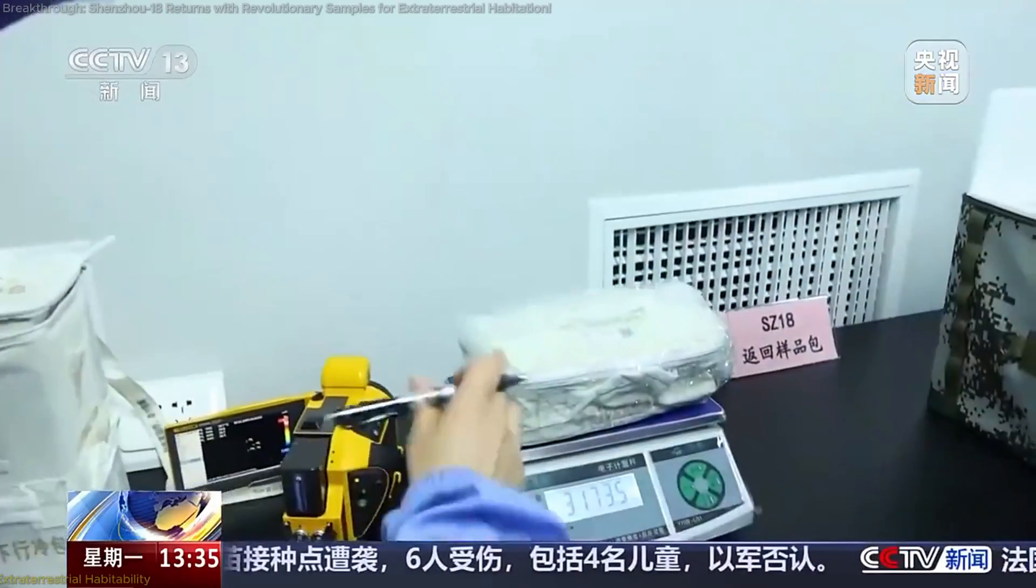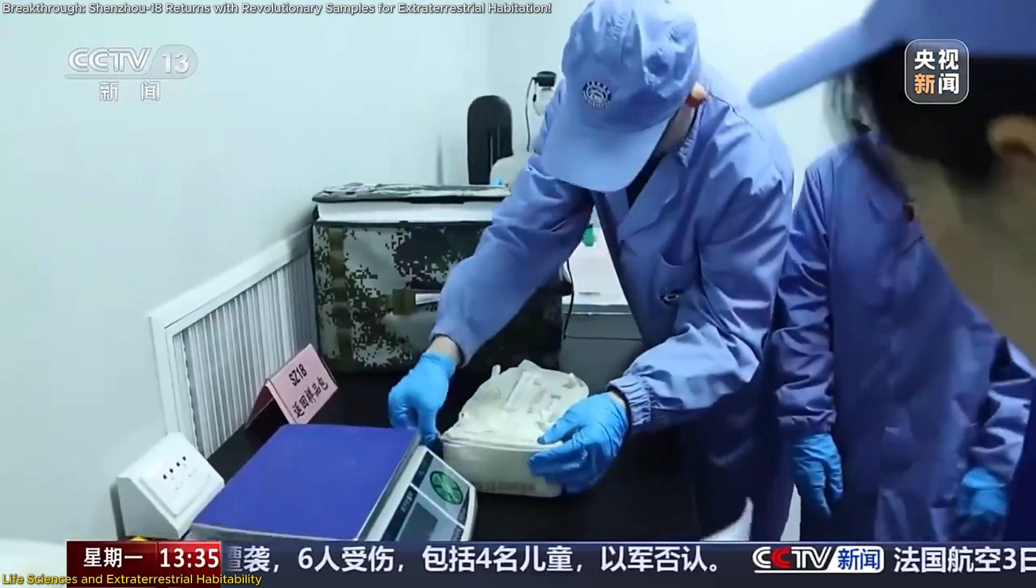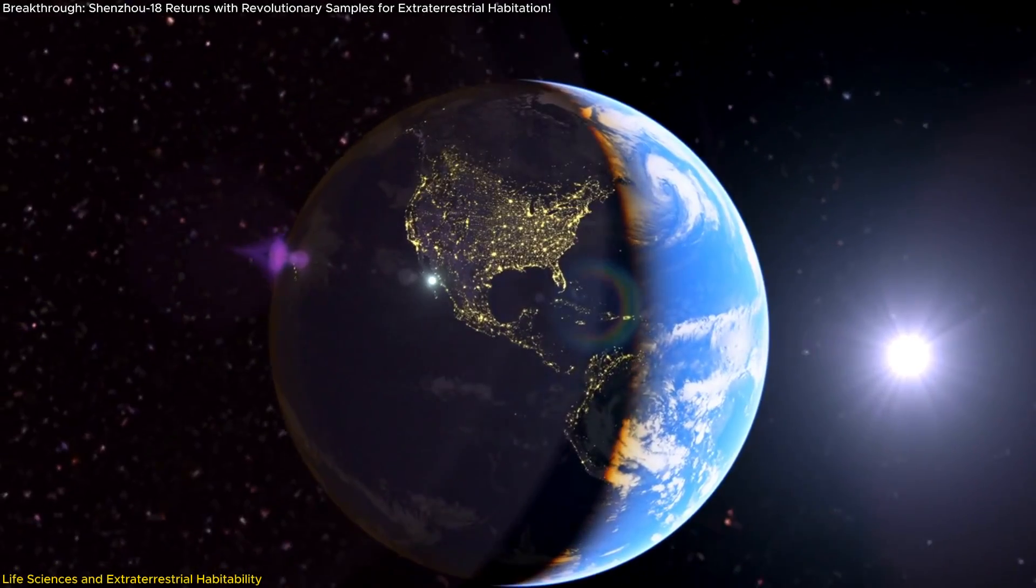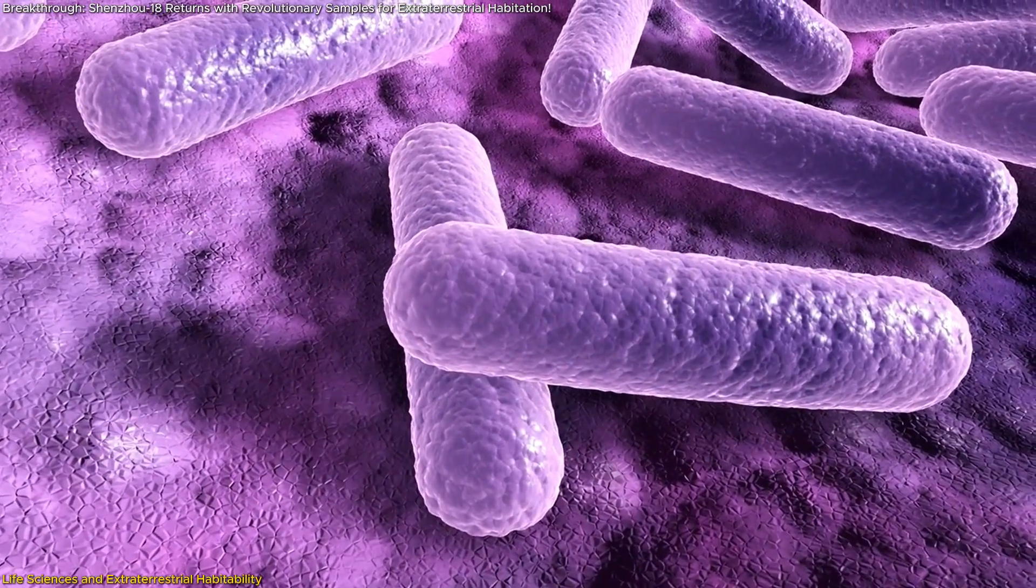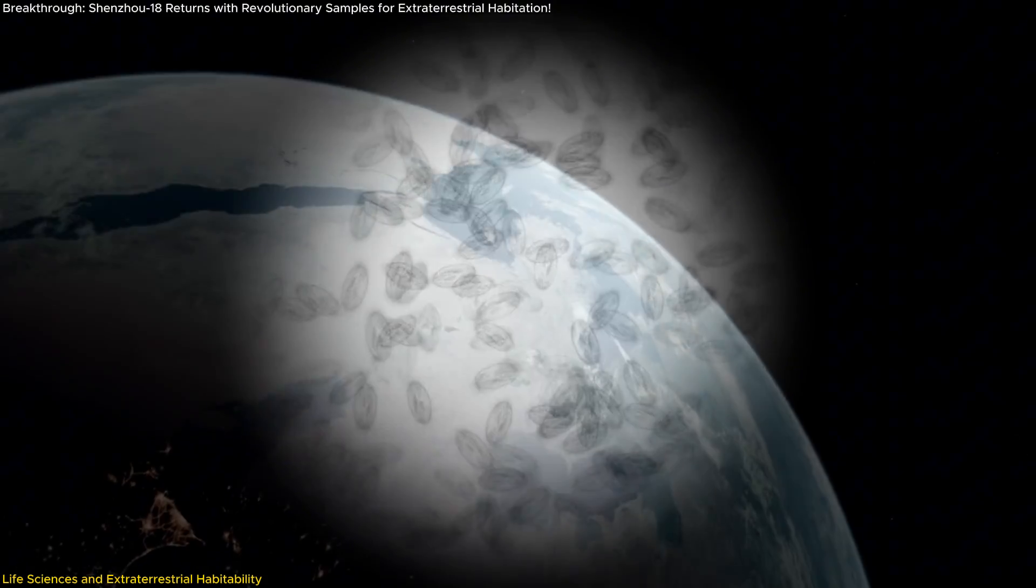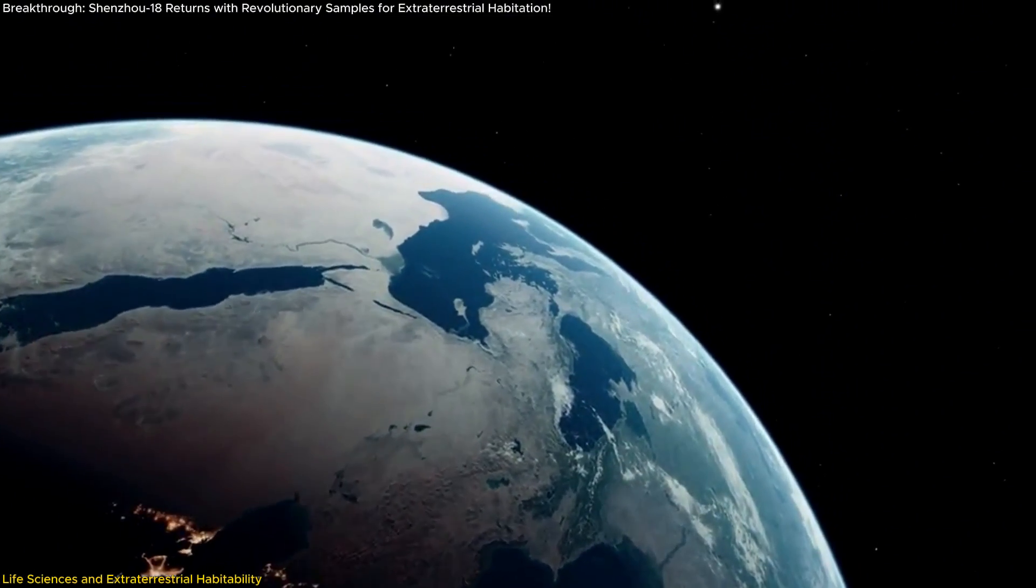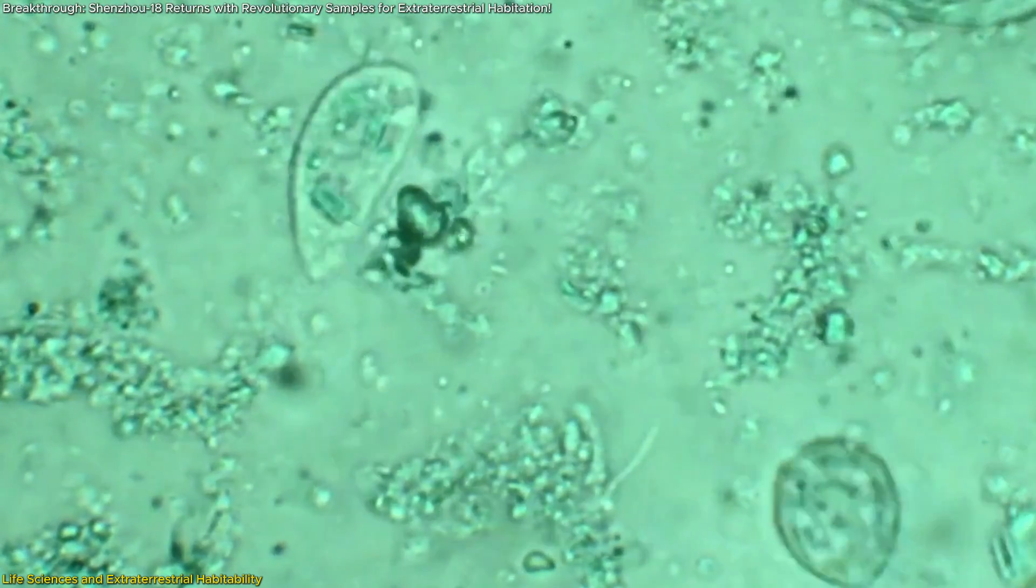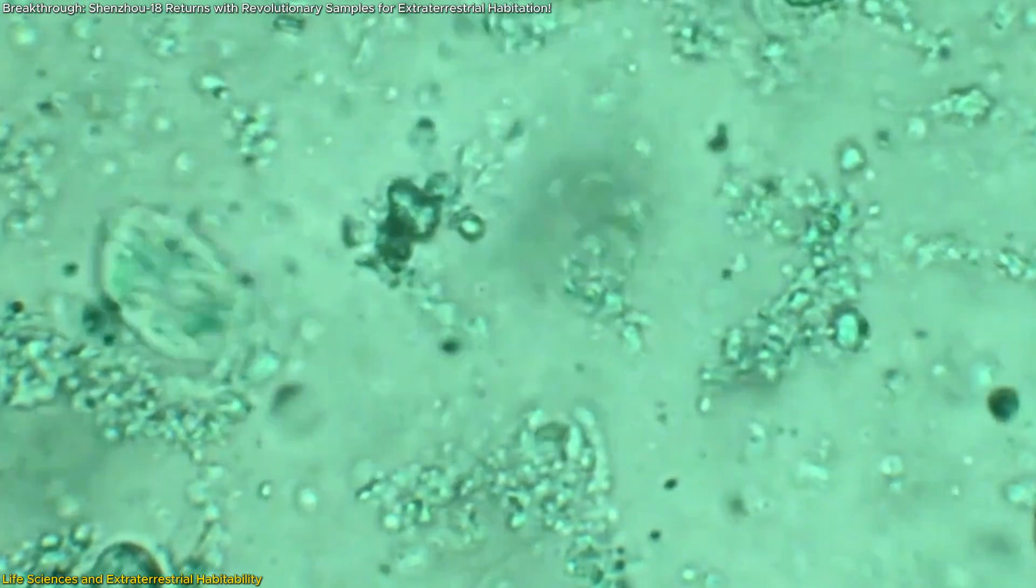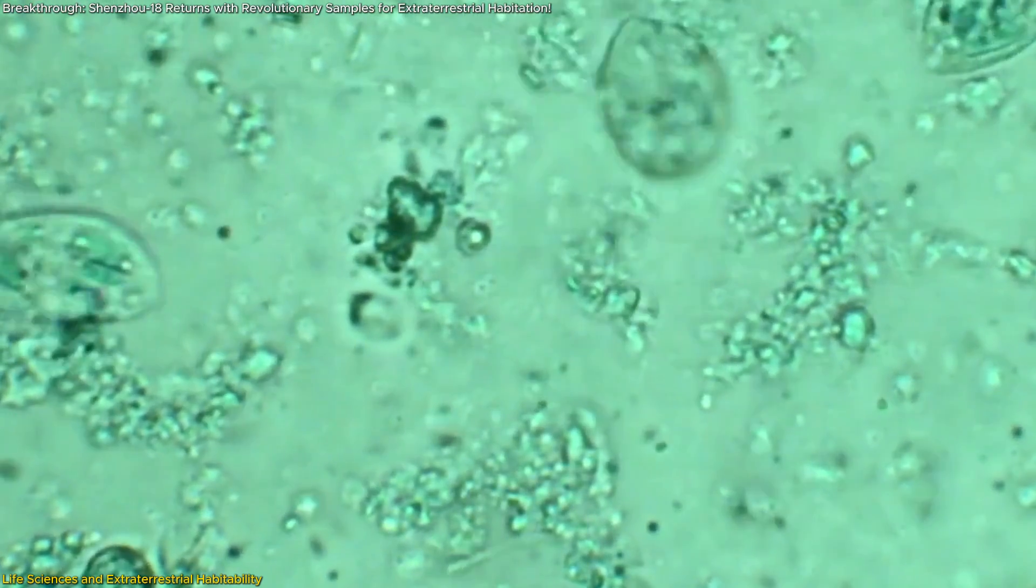One of the most thrilling aspects of the Shenzhou-18 mission's samples is their potential to help us understand life's adaptability in space. Among the biological samples are methane-producing archaea, rock-dwelling microorganisms, and microbes resistant to radiation. These organisms, known as extremophiles, are uniquely suited to environments that would be inhospitable to most life forms on Earth.